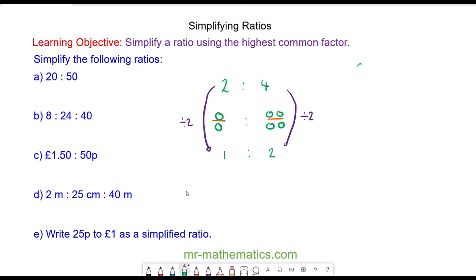For question A, we have a ratio of 20 to 50. The highest common factor of both numbers is 10, so we'll divide both by 10. 20 divided by 10 is 2, and 50 divided by 10 is 5, so it simplifies to 2 to 5.